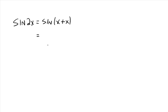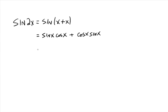From our sum of two angles formula from the previous video, we could rewrite this as sine of the first angle times the cosine of the second angle, plus the cosine of the first angle times the sine of the second angle. That gives us sine x cosine x plus cosine x sine x. Those are the same thing, so this just goes to 2 sine x cosine x. So sine of 2x can be rewritten as 2 times the sine of x cosine of x.